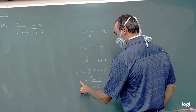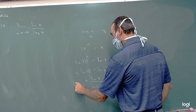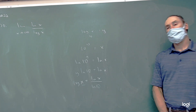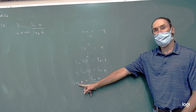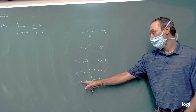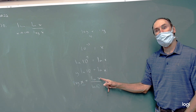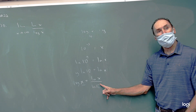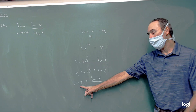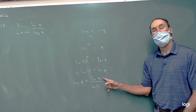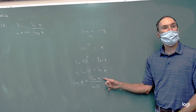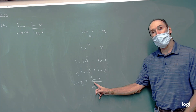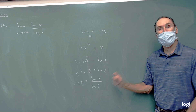Remember, our y was our common log of x. So the change of base says: if you don't like the base you're in, just call it the base you want, and then divide by the logarithm of the old base. So we have log x — we just made it natural log x — and we have this little adjustment factor: we divide by natural log of the old base.